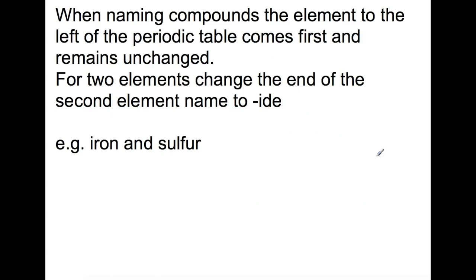For naming compounds, the element to the left of the periodic table comes first and remains unchanged. For a two element compound, you change the end of the second element to the IDE ending. So here we have iron and sulfur. Iron remains unchanged, and the end of the sulfur name needs to become IDE. So we have iron sulfide.